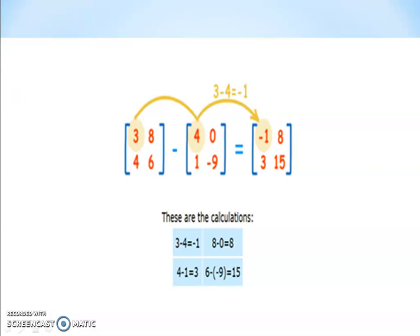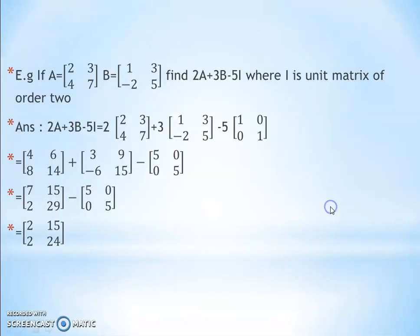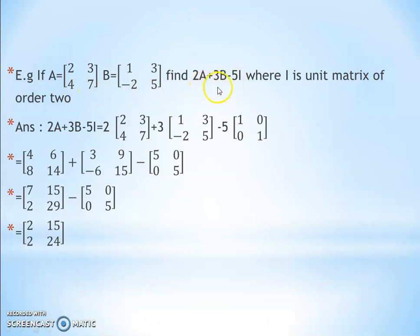Now we take an example based on addition and subtraction of matrices with the identity matrix. If A = [2, 3; 4, 7] and B = [1, 3; -2, 5], find 2A + 3B - 5I, where I is the unit matrix of order 2. Both matrices are given and we need to find 2A + 3B - 5I, where I is the identity matrix of order 2 by 2.